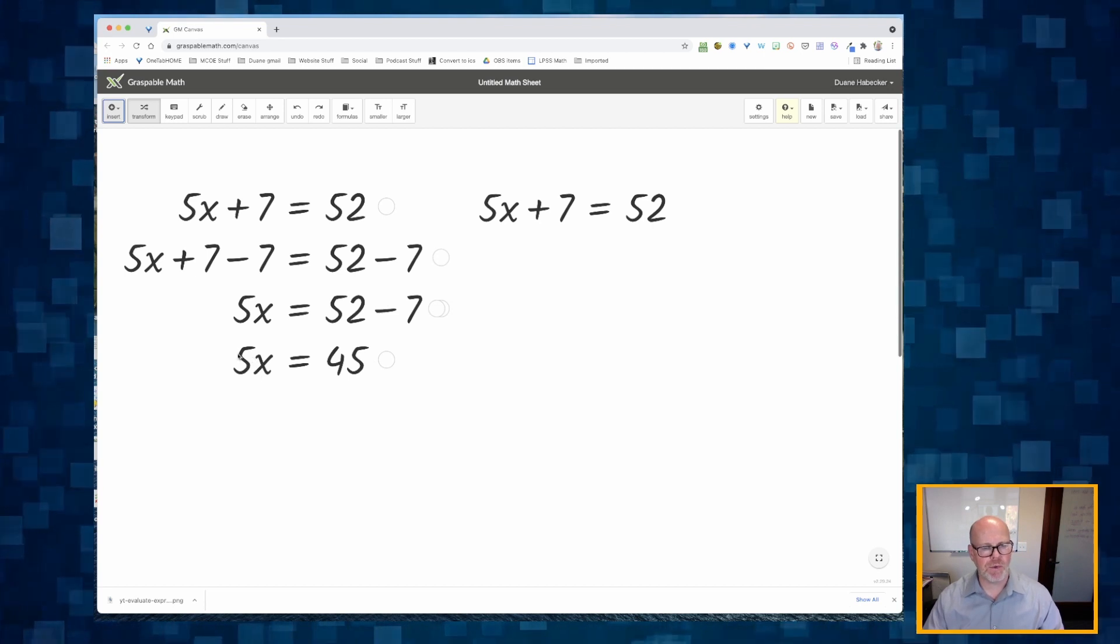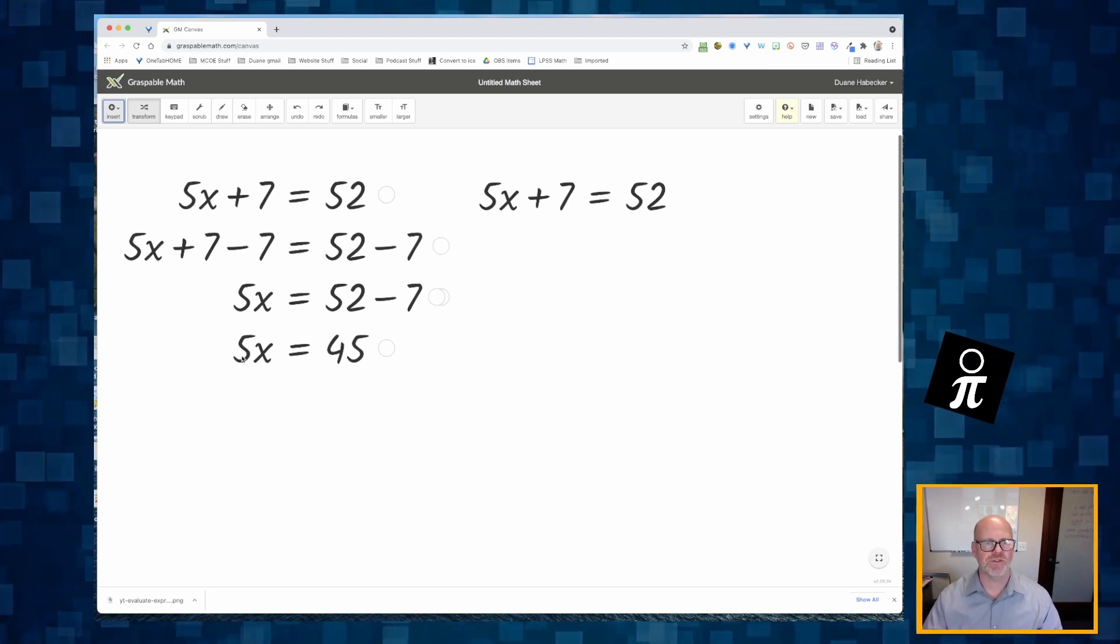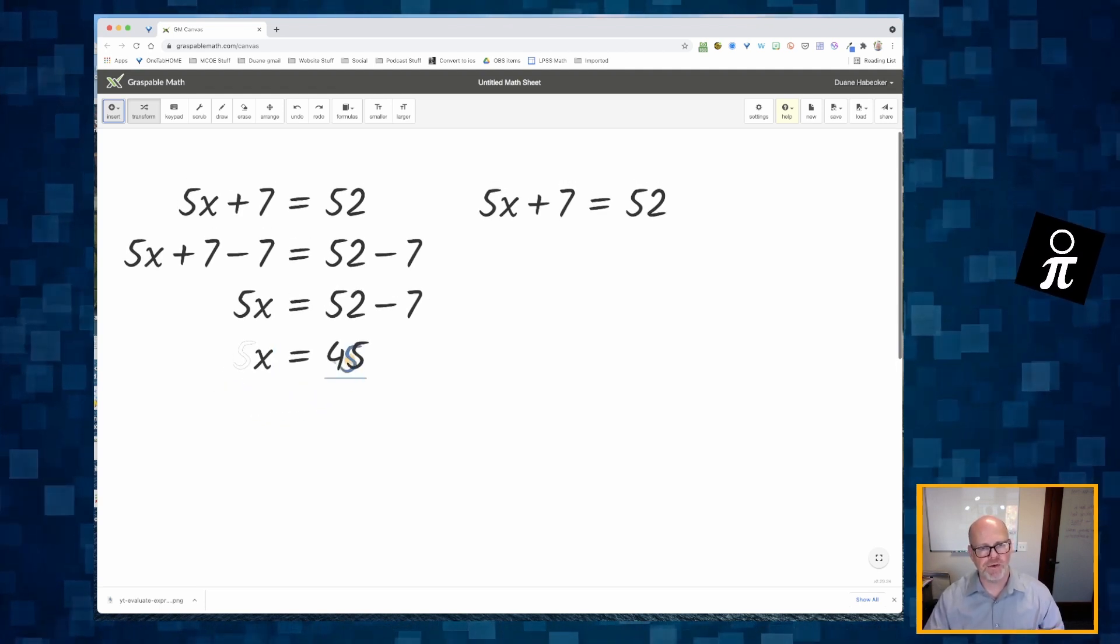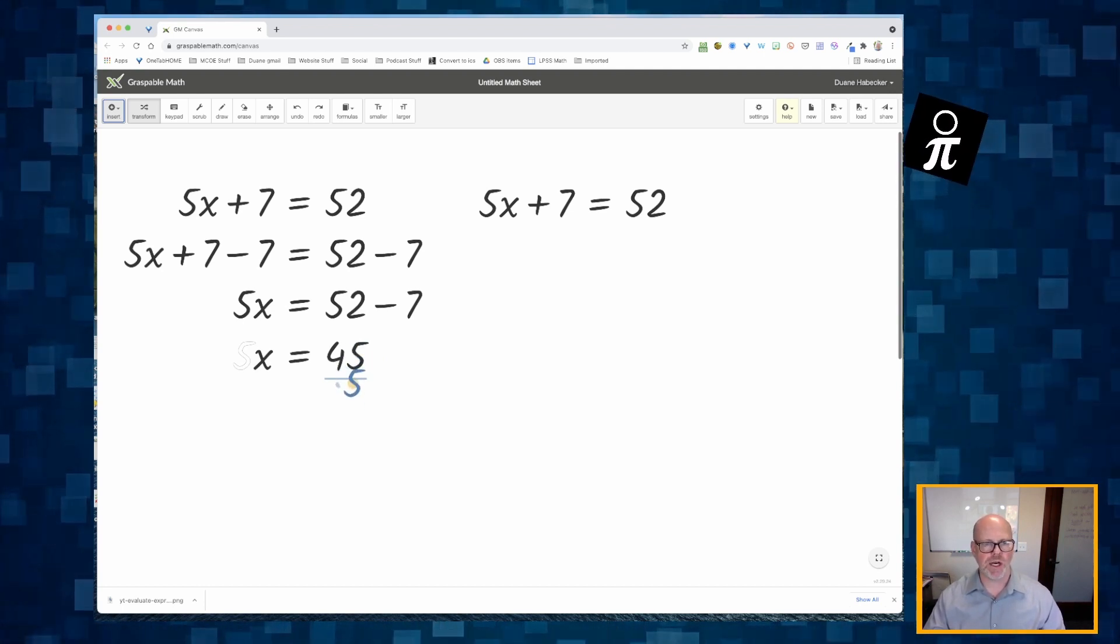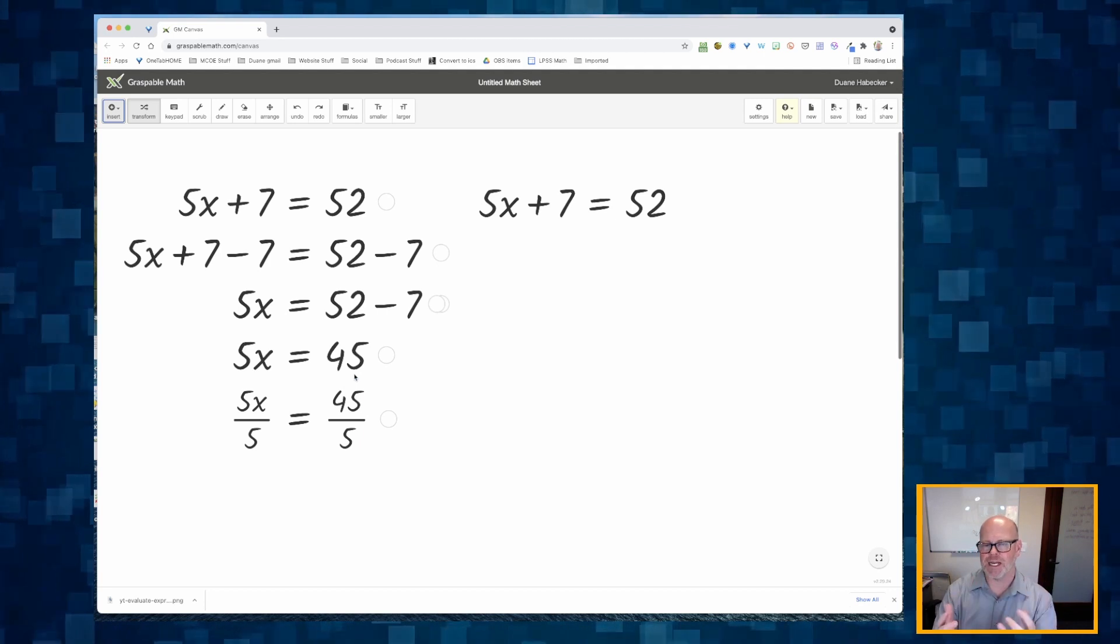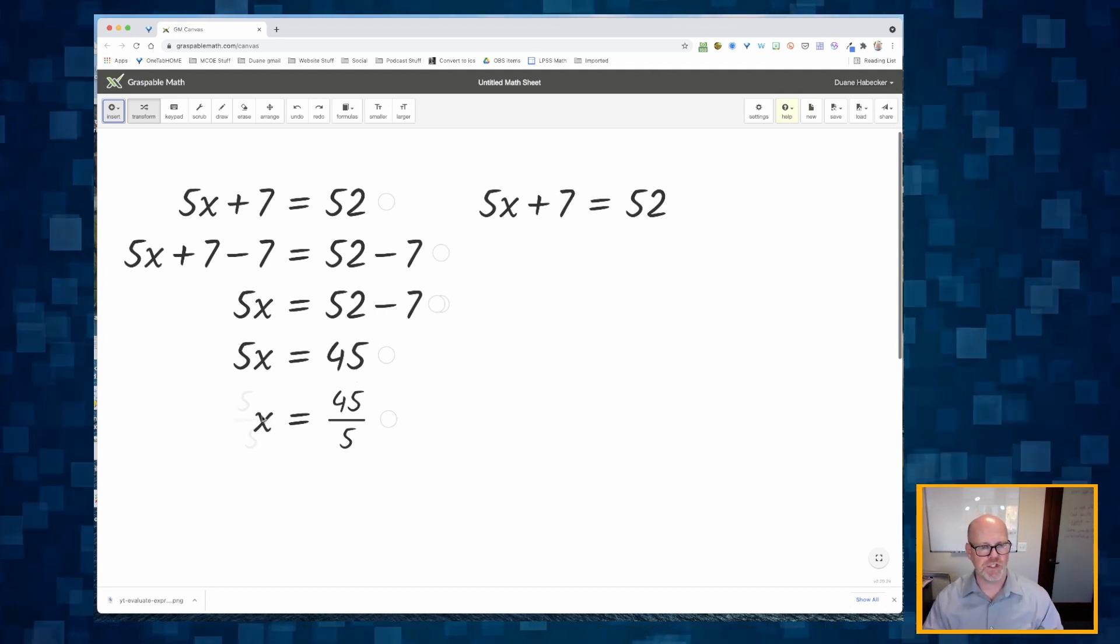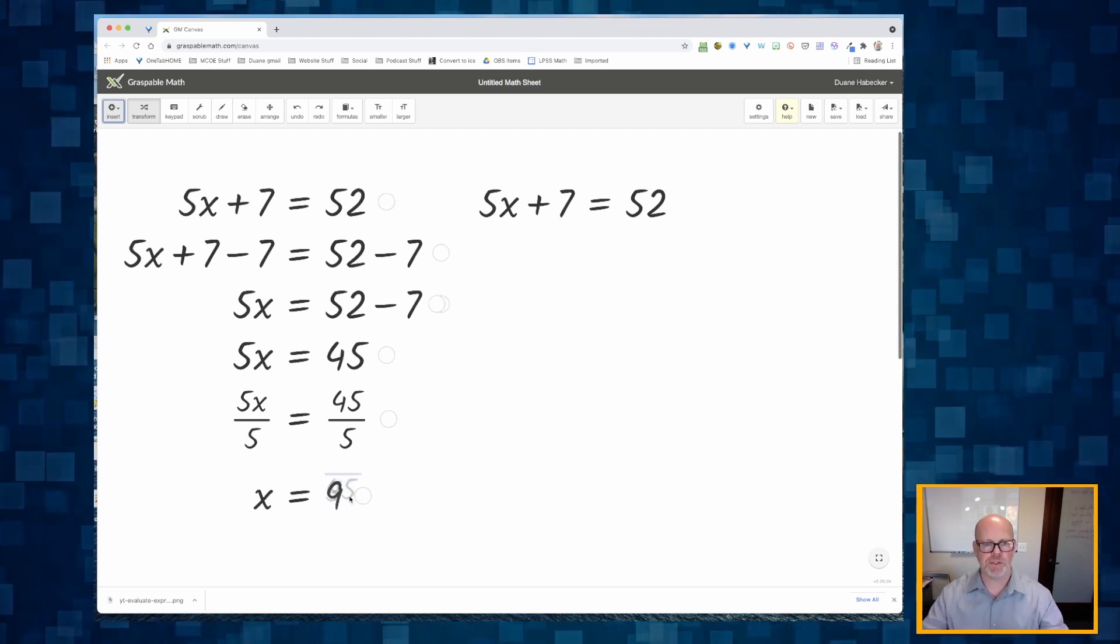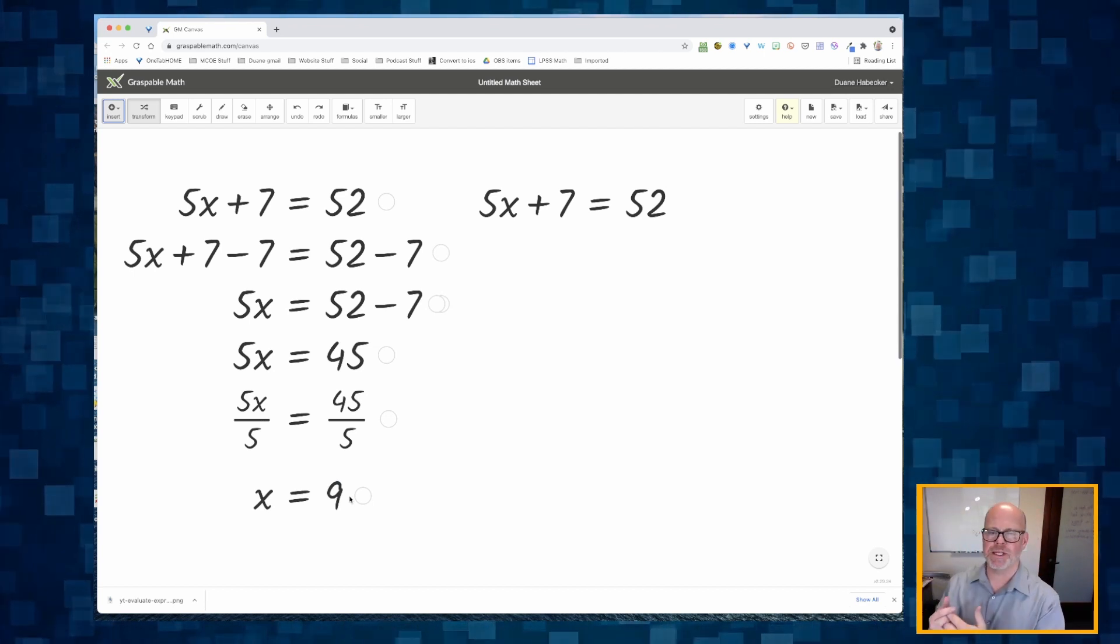And then what am I going to do? Well, I want to divide this 5. I want to get rid of this 5. So I'm going to click and hold on that 5 and I'm going to drag it over here underneath this 45. Notice that's where the blue line is trying to put it. And when I do that, really what I did was I divided both sides by 5 and I can click on my division symbol to simplify. I can click on this division symbol to simplify. I now get the value x is equal to 9.